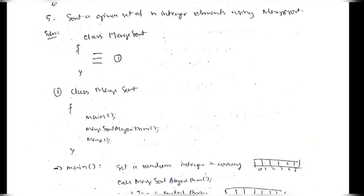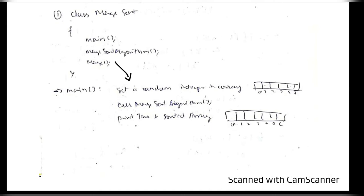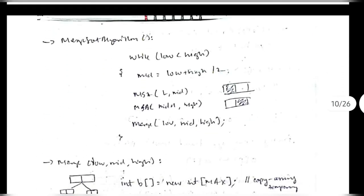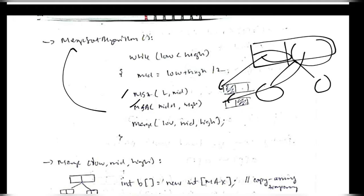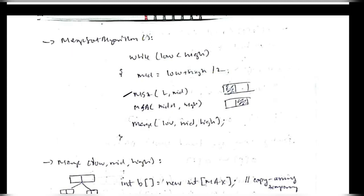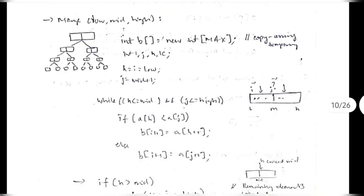For the fifth program, we sort n integers using Merge Sort. We have class MergeSort with three functions: main, mergeSort, and merge. In main, we create a random integer array, call mergeSort, then print the time and sorted array. The mergeSort algorithm keeps dividing the array until only one element remains, passing each half recursively to the same algorithm. When low equals high, mergeSort doesn't execute. When at least two elements exist, it calls the merge function.